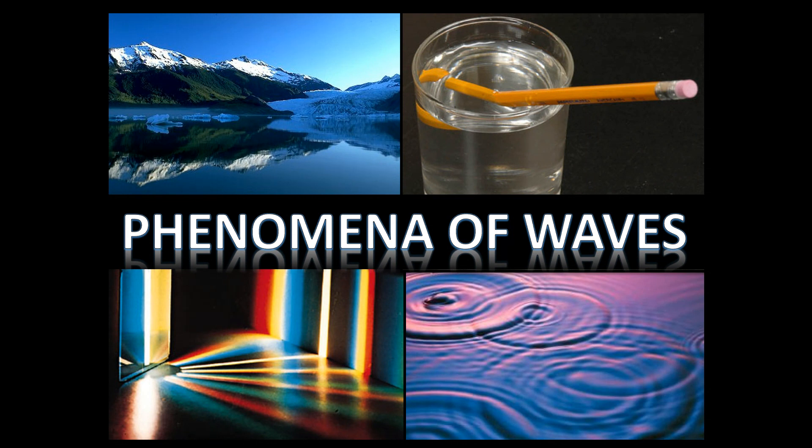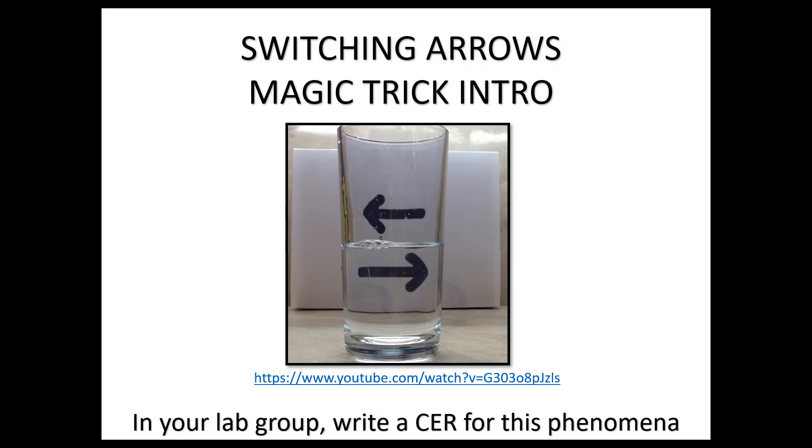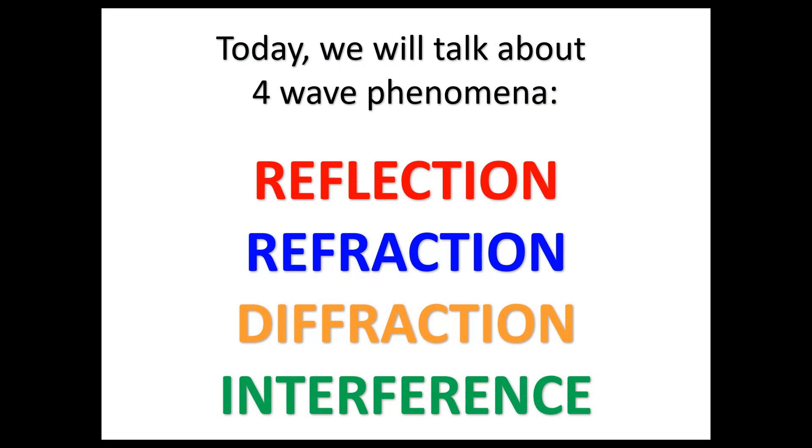Now we're going to talk about what can happen when these waves meet obstacles. So we call this phenomena of waves because these are some things that happen when waves meet obstacles or barriers. So a wave can be reflected. It can be refracted. It can undergo what we call diffraction, and then it can undergo interference, which we're going to talk about today.